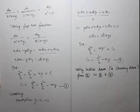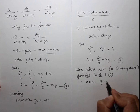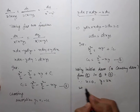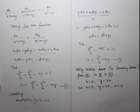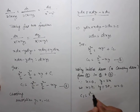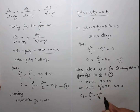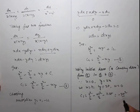Using the initial data u = 0 on y = 2x, let x = t, y = 2t, u = 0. Substituting into equation 3: c₁ = t²/2 - 4t²/2 - t(2t) = -7t²/2.